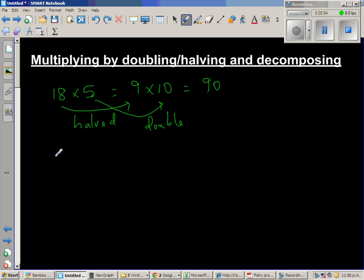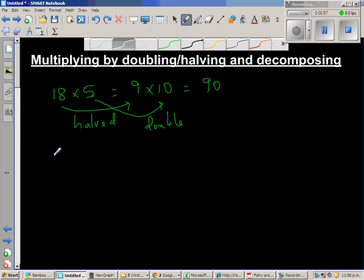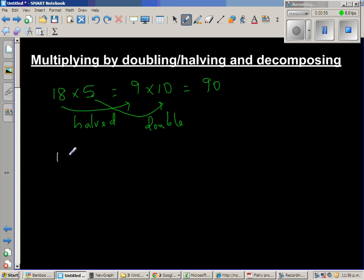By decomposing, how would you do this? The same thing. 18 times 5 is same as 5 times 18. This is called the commutative property. 5 times 18 is same as 5 times 10 plus 5 times 8. So this is nothing but 50 plus 40 which equals 90.